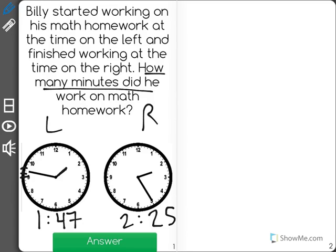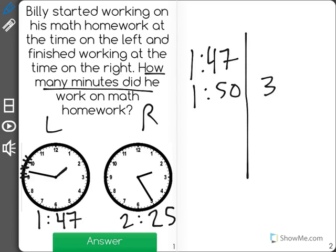Now the way that I like to find this is I start at 1:47 and then I count how much time passes. So in order to get to 1:50, Billy had to work for 3 more minutes. Then 10 more minutes would move him all the way up to 2 o'clock. That's 10 minutes.